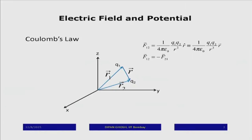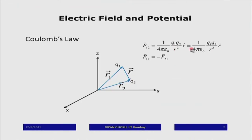We all know Coulomb's law — I will not state it the way you do in school. Supposing I have a charge q1 at a position vector r1 and a charge q2 at a position vector r2, so that the vector r is the relative position vector of q2 with respect to q1. Then the force on the second particle due to the first is given by 1 over 4πε₀ times q1 q2, the product of the charges, divided by the square of the distance between them, and a vector r.